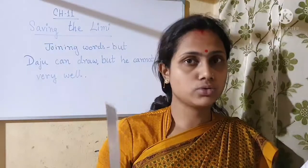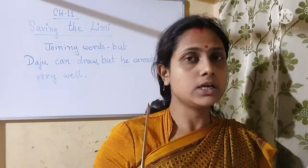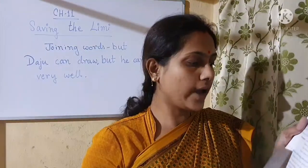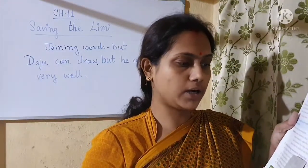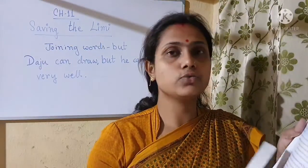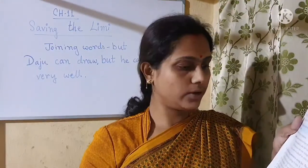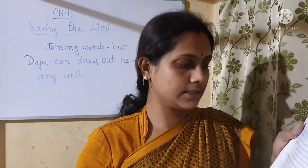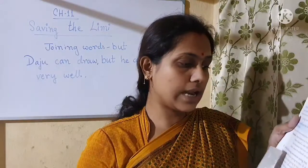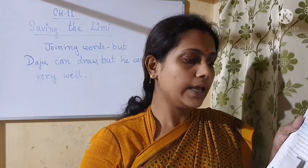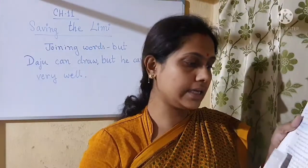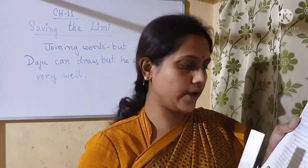So it means two opposite characters — one who cannot come to school on time and one who can. Now in your book, join the following sentences using 'but'. The first one has been done for you, and you will do this exercise in your copy. First one: 'It looked like it was going to rain. It did not rain.' You join it as: 'It looked like it was going to rain but it did not rain.'